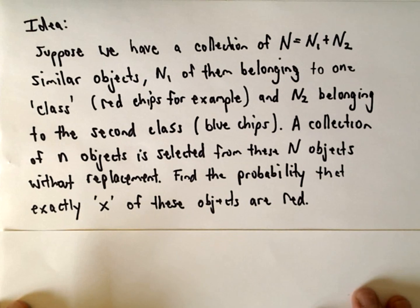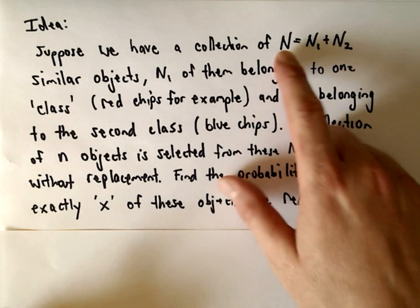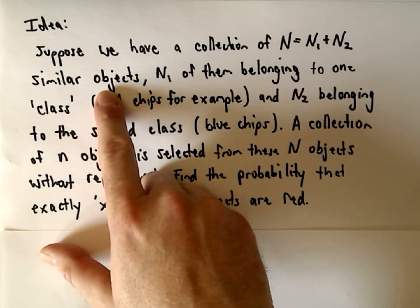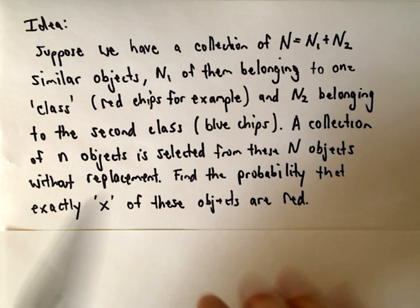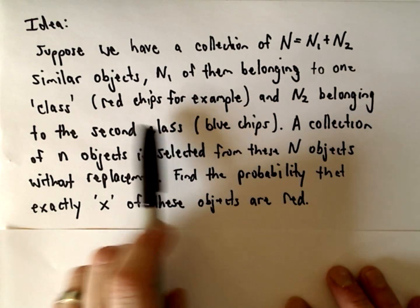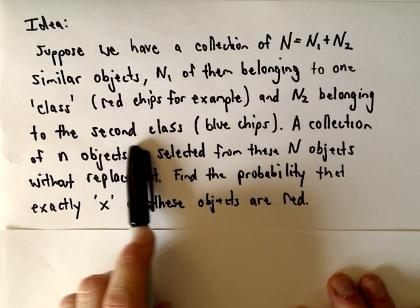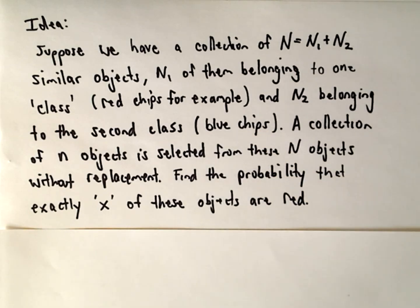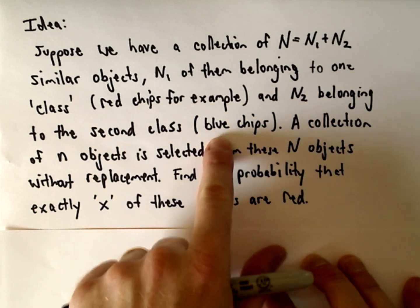So let me read through this. We have a collection of capital N equals n sub 1 plus n sub 2 similar objects. N sub 1 of them belong to one class, for example red chips, and n sub 2 of them belong to the second class, like blue chips. So you've got all these chips - red chips and blue chips.